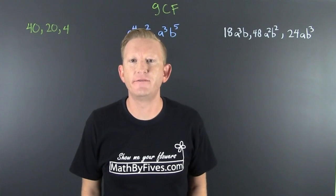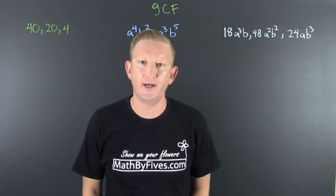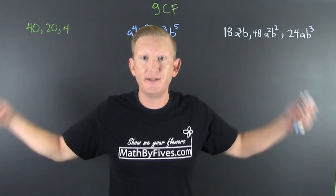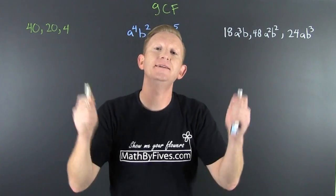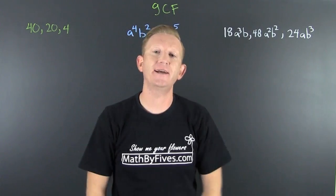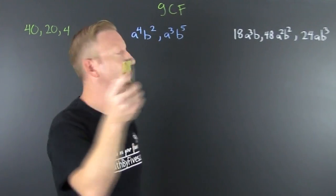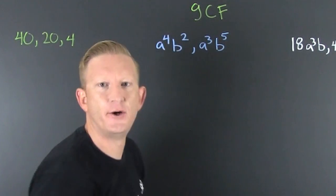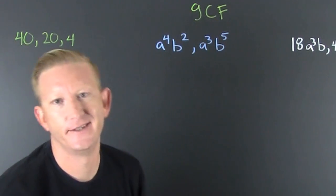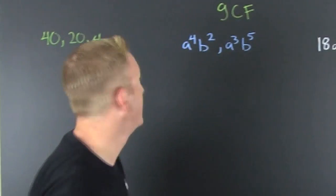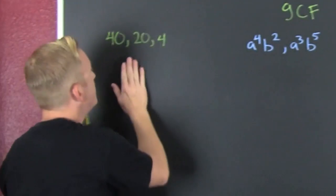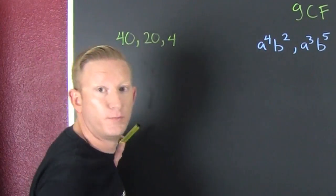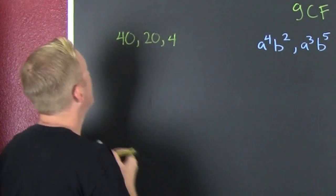You say you have a photographic mind — let's develop it with the greatest common factor, the GCF, as it's known on the streets. Let's start with a numeric example.